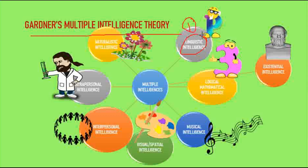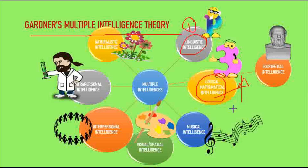Coming to the next: logical or mathematical intelligence — mathematical ability and how you deal with numbers. People with higher ability in this area include scientists, engineers, physicists, and economists. Examples are Albert Einstein, C.V. Raman, and Archimedes.